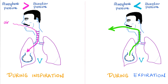During inspiration, air is coming into the lung. Therefore, atmospheric pressure must be greater than alveolar pressure — the alveolar pressure is negative at the beginning of inspiration, which forces air inward. During expiration, air goes to the outside. Therefore, the alveolar pressure is now positive — greater than atmospheric pressure.